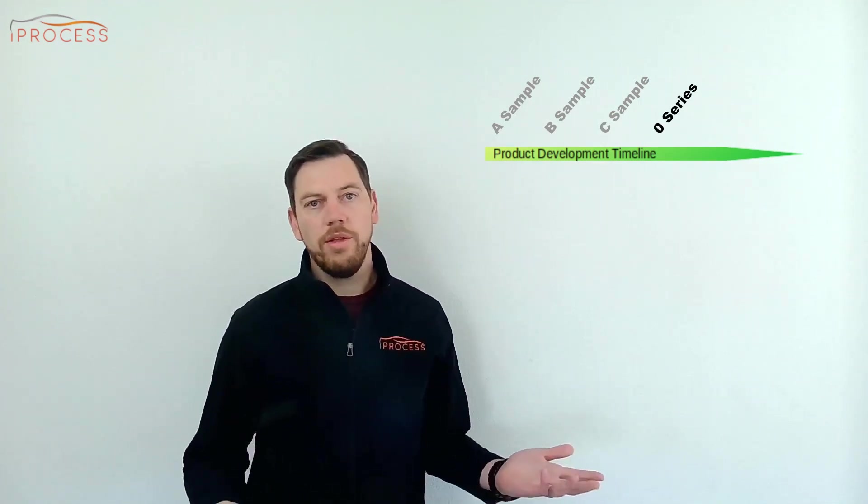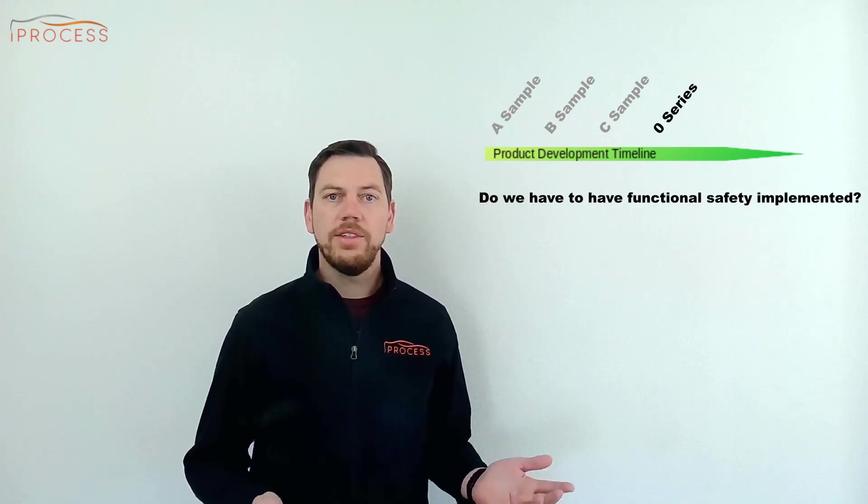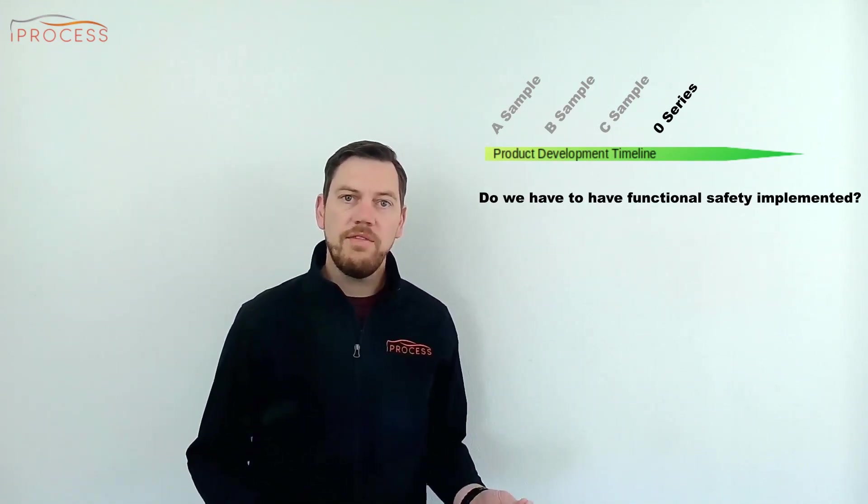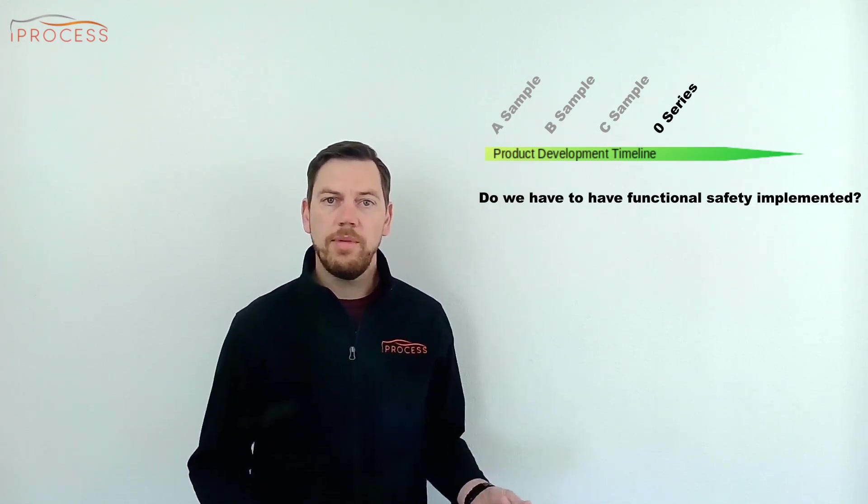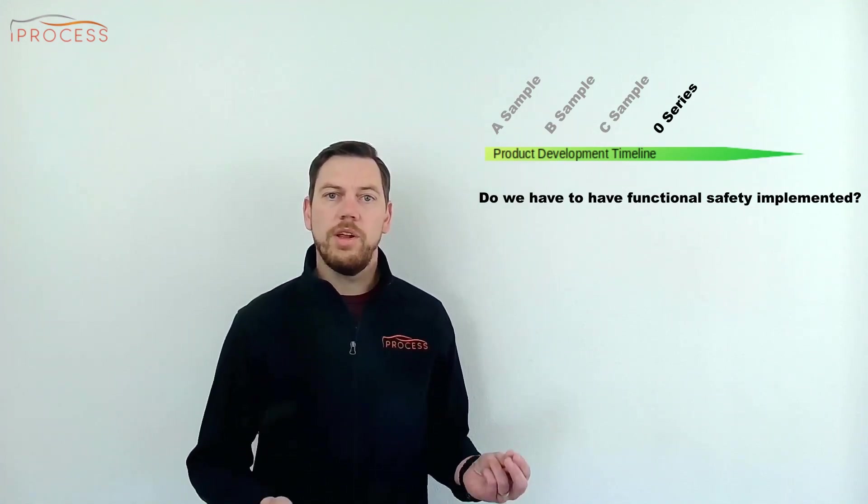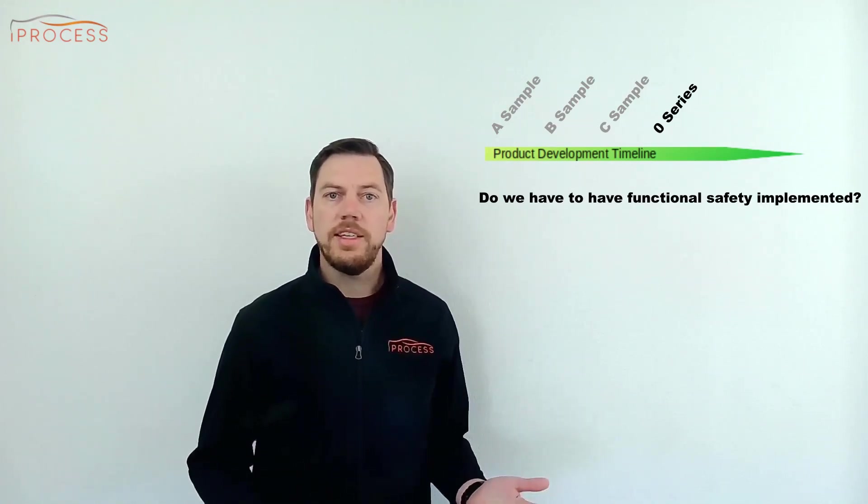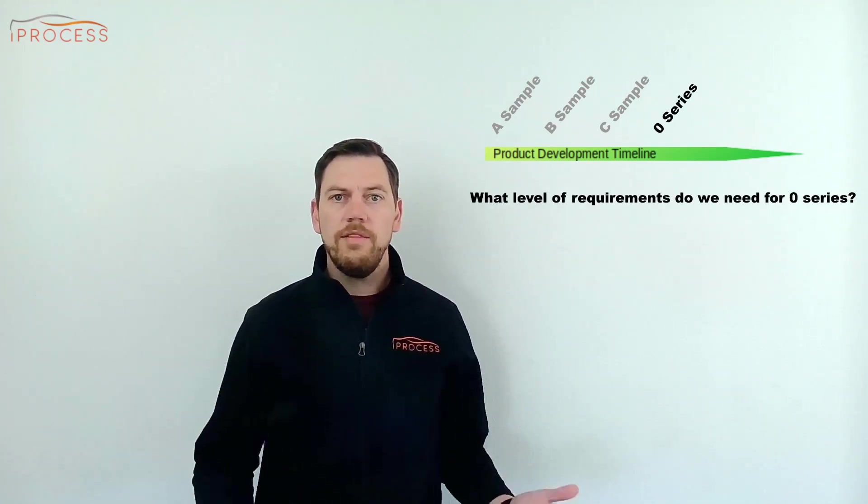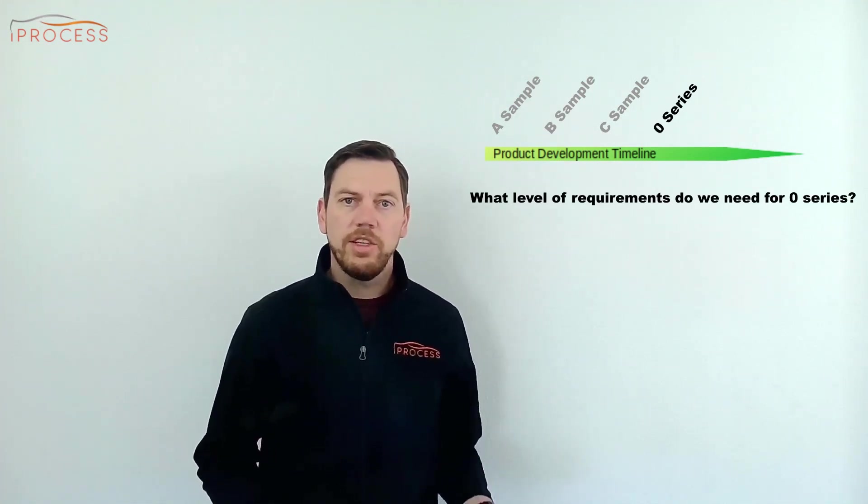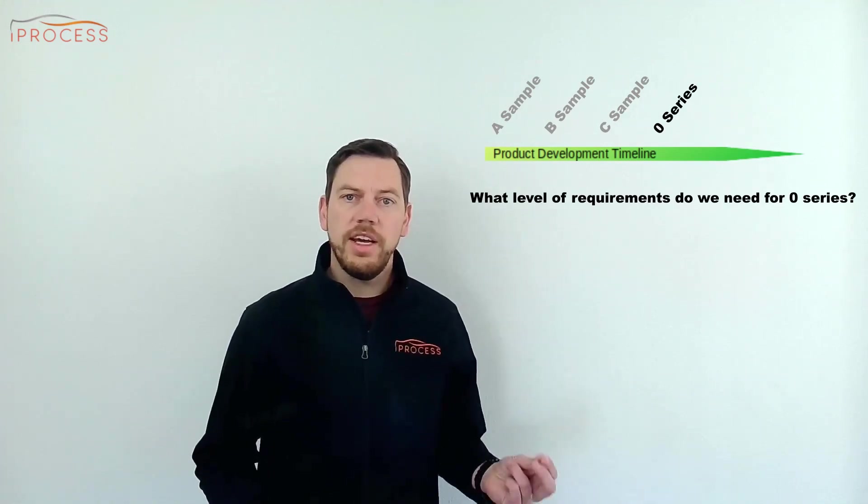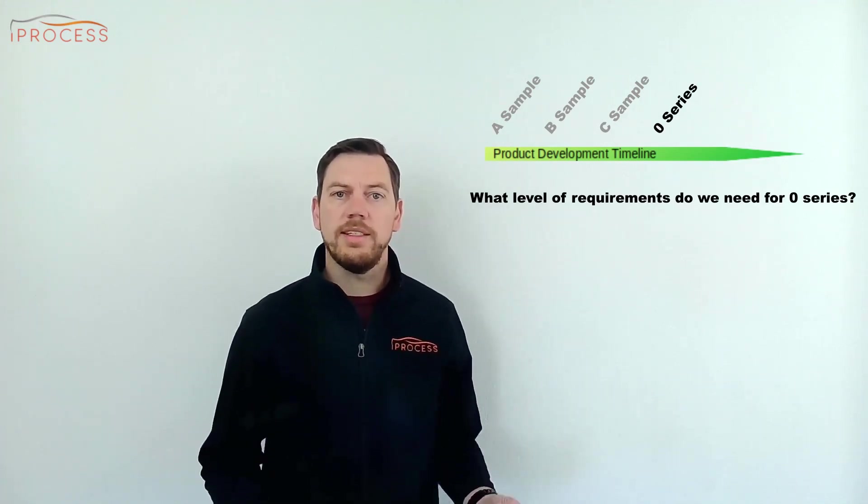And for the last time our three questions. Do we have to have functional safety implemented? Well of course functional safety is now fully implemented and reliably functional. These samples will be operated by normal people without any special safety training. What level of requirements do we need for D sample? Same as already mentioned for the C sample. The requirements are frozen and a stringent change management process is performed.